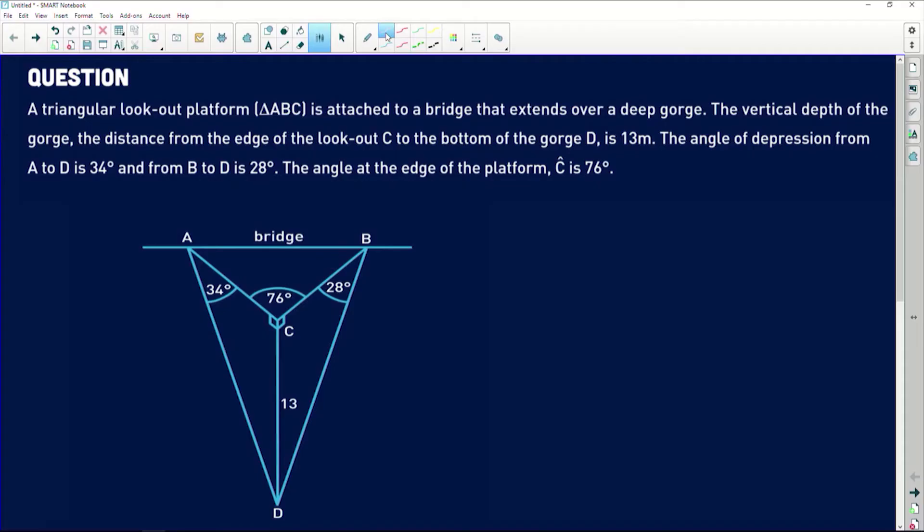Great! This is actually a really great question because it involves both 2D and 3D elements, so it's quite involved. It's got a long question so let's just jump right into it. It says a triangular lookout platform, i.e. triangle ABC, that's this triangle over here.